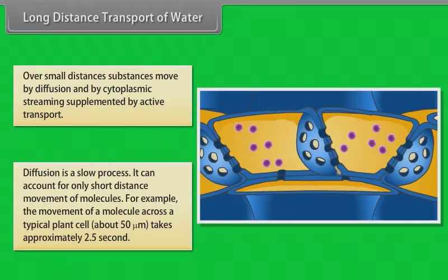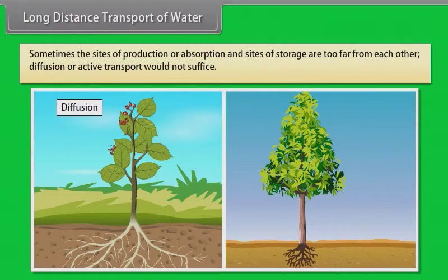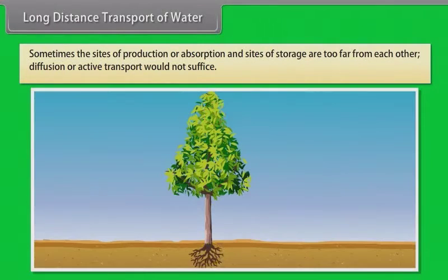Some trees are up to 50 feet tall. So think, how many years it would take for the movement of molecules over a distance of 25 to 30 feet within a plant by diffusion alone? Sometimes the sites of production or absorption and sites of storage are too far from each other. Diffusion or active transport would not suffice.